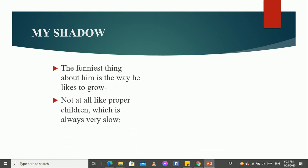The funniest thing about him is the way he likes to grow. Not at all like proper children, which is always very slow. So, what is the funniest thing about the shadow? That it always grows from morning to evening. If we see different times, we are getting different sizes of shadow. Not at all like proper children, which is always very slow.